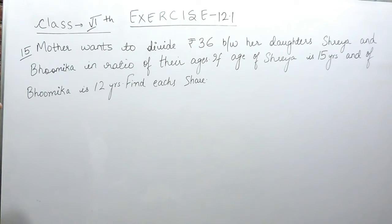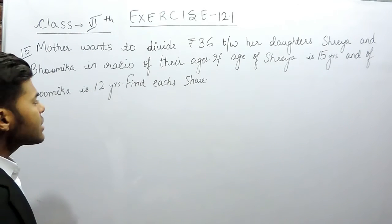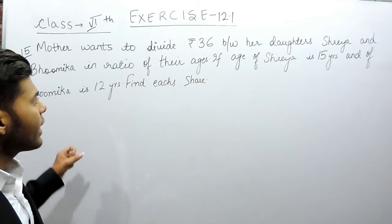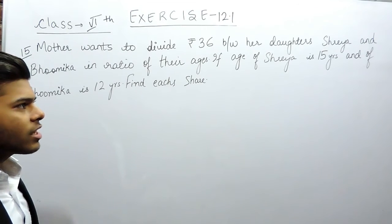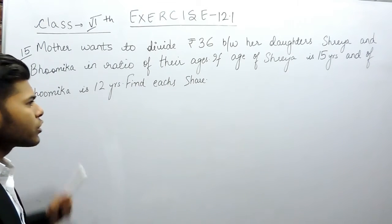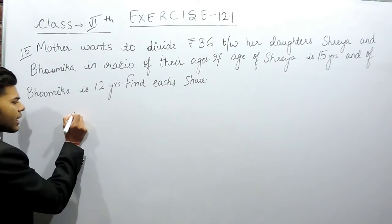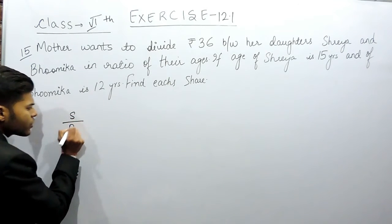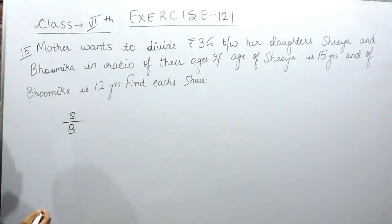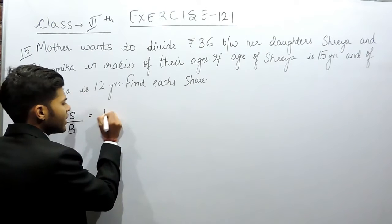We have to find the share of each. As you can see, she wants to divide it in the ratio of their ages. So first we will find the ratio of their ages - the ratio of Shreya's age to Bhumika's age will be 15 upon 12.